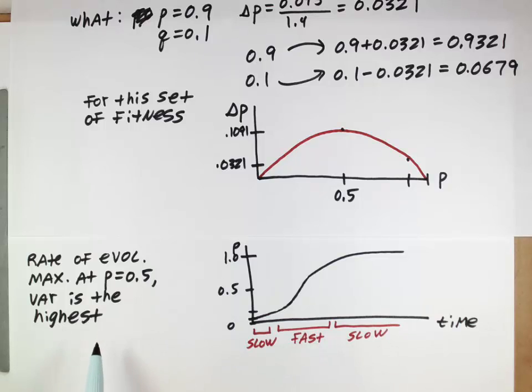And in fact, we saw this a little bit before when we thought about the breeder's equation. And so, there's this idea that the rate of evolution is proportional to the genetic variation. And when you have more of it, you have a faster rate.